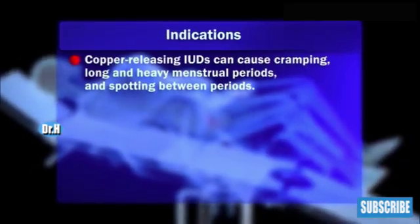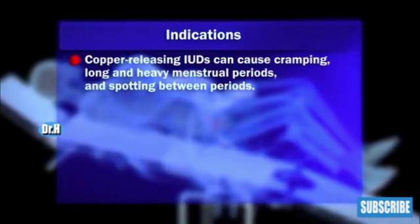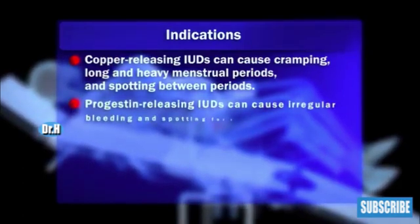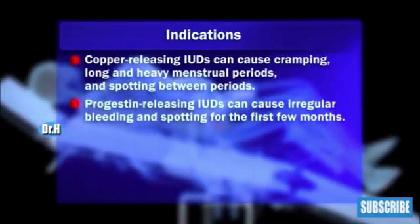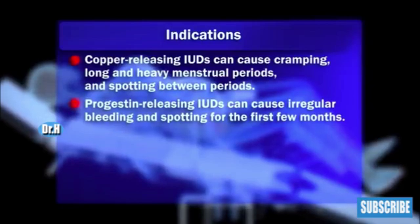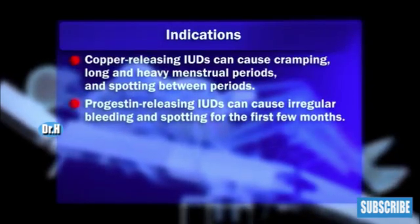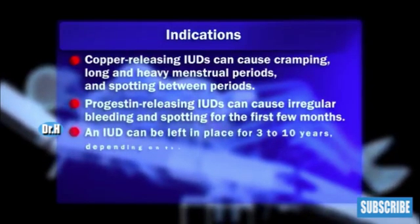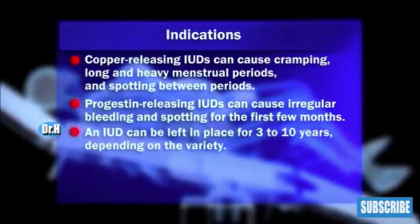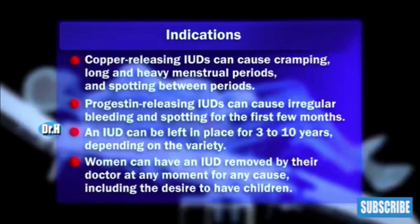Copper-releasing IUDs can cause cramping, long and heavy menstrual periods, and spotting between periods. On the other hand, progesterone-releasing IUDs can cause irregular bleeding and spotting for the first few months. An IUD can be left in place for 3 to 10 years depending on the variety.